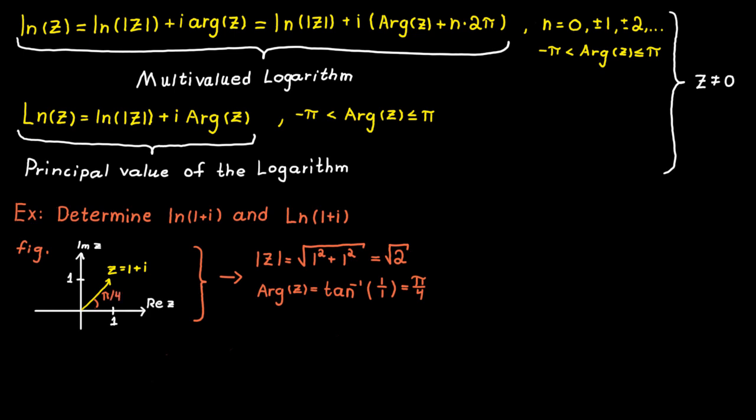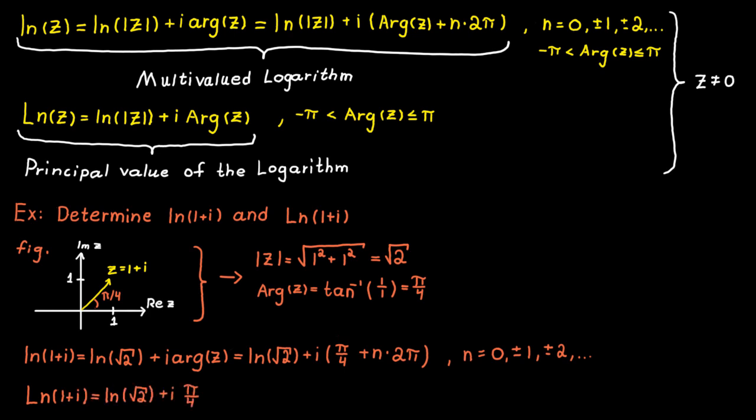And now the only thing that is left is to plug in the values into the formulas, so the multivariable logarithm will become the following. And the principal value uses the multivariable with n equal to zero, so that one becomes the following.